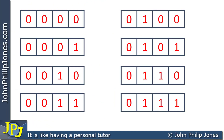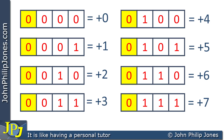On this slide you can see all the combinations where the sign bit is a zero — in other words where the sign bit represents positive. The first one is plus zero, the next one is plus one, and continuing we can see we go from plus zero to plus seven.